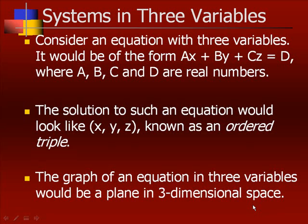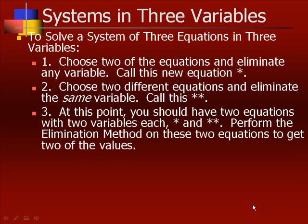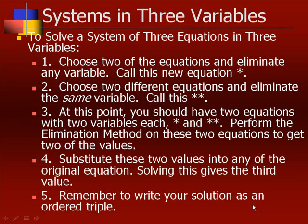The graph of an equation in three variables would be a plane in three-dimensional space. To solve a system of three equations in three variables, the first thing we're going to do is choose two of the equations and eliminate any variable. Let's call this new equation star. Then choose two different equations and eliminate the same variable — let's call this equation star star. At this point you should have two equations with two variables each. Perform the elimination method on these two equations to get two of the values. Then substitute these two values into any of the original equations — solving this will give you the third value. Remember to write your solution as an ordered triple.